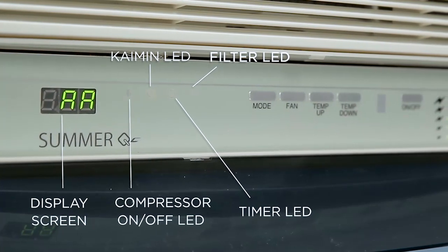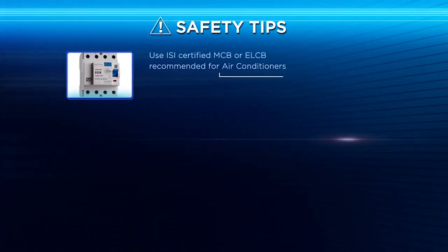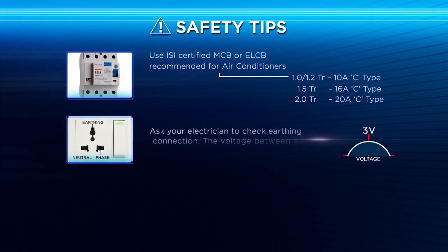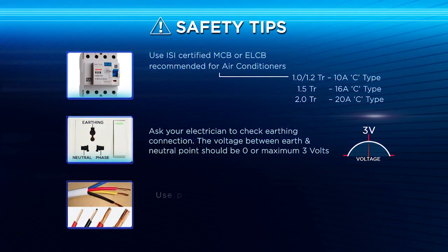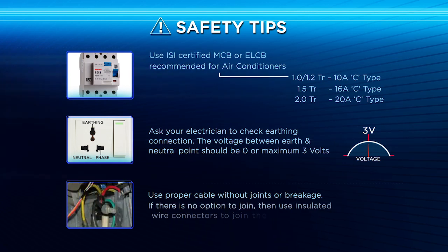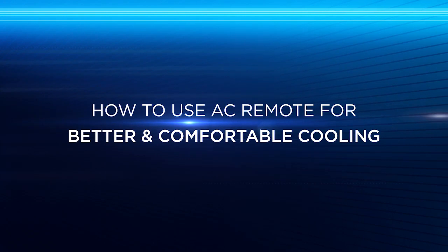Safety tips: Use ISI certified MCB or ELCB recommended for air conditioners. Ask your electrician to check the earth connection — the voltage between earth and neutral point should be zero or a maximum of three volts. Use proper cables and wires without joints or breakage. If there is no option, use insulated wire connectors to join the wires.